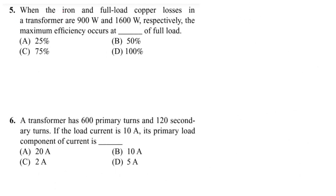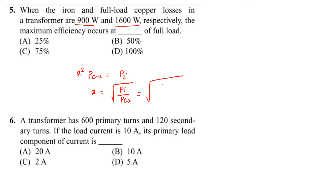Problem number 5: The iron loss and full load copper loss in a transformer are 900 watt and 1600 watt respectively. The maximum efficiency occurs at what fraction of full load. The condition for maximum efficiency is copper loss = iron loss, so x = √(Pi/PCU) = √(900/1600) = √(9/16) = 3/4 = 75%. Option C is correct.